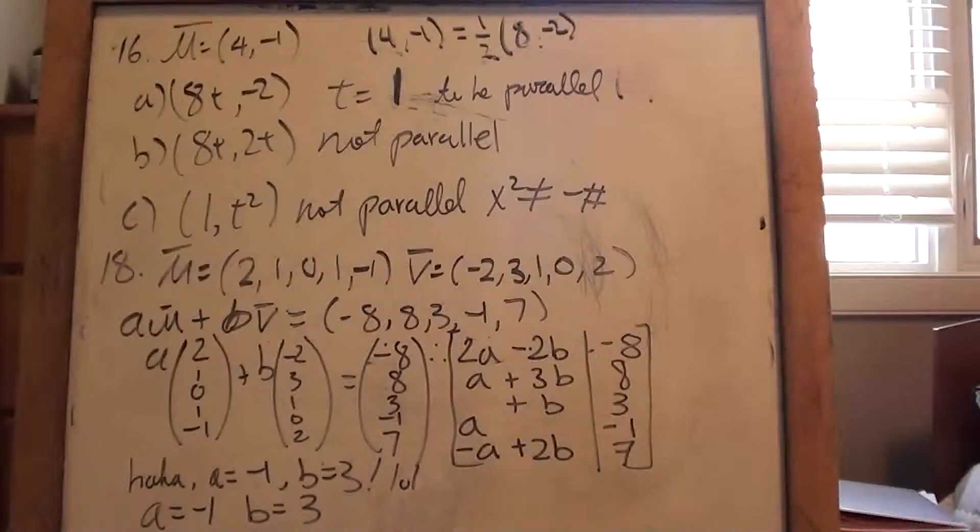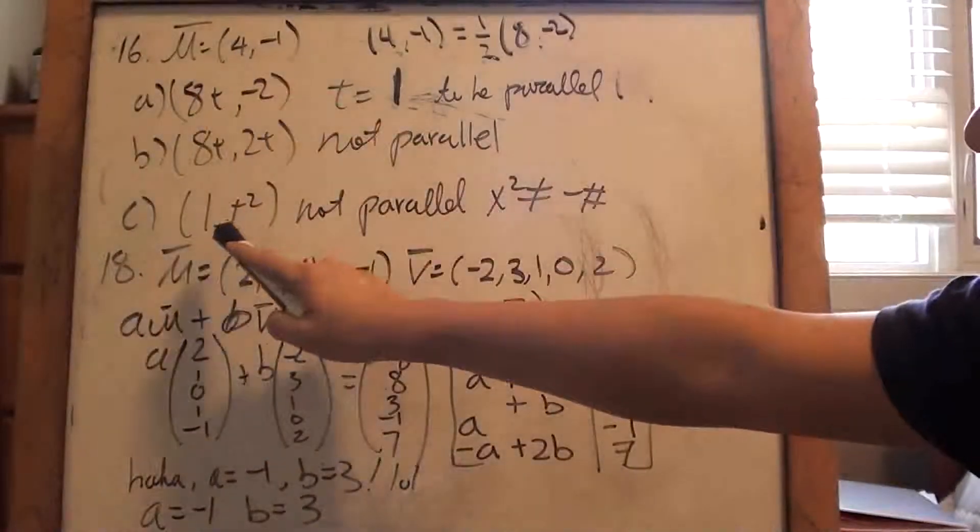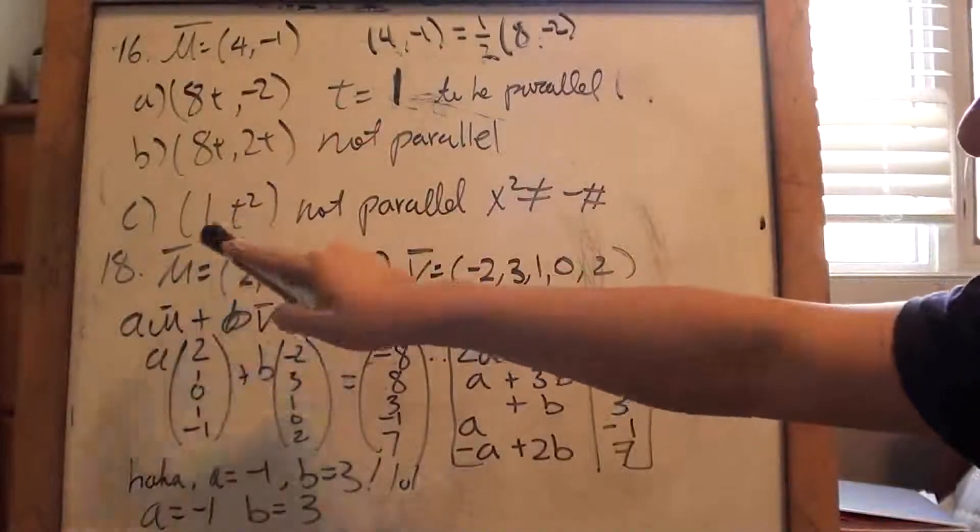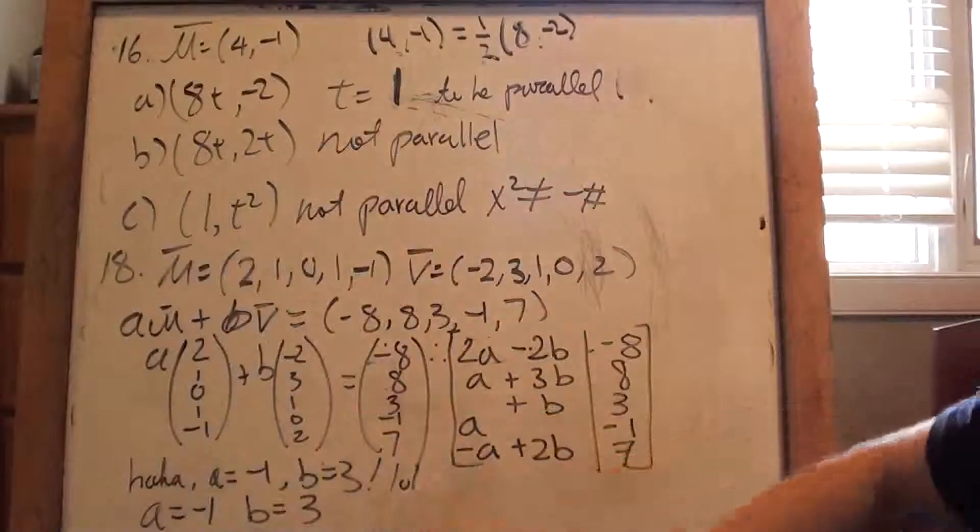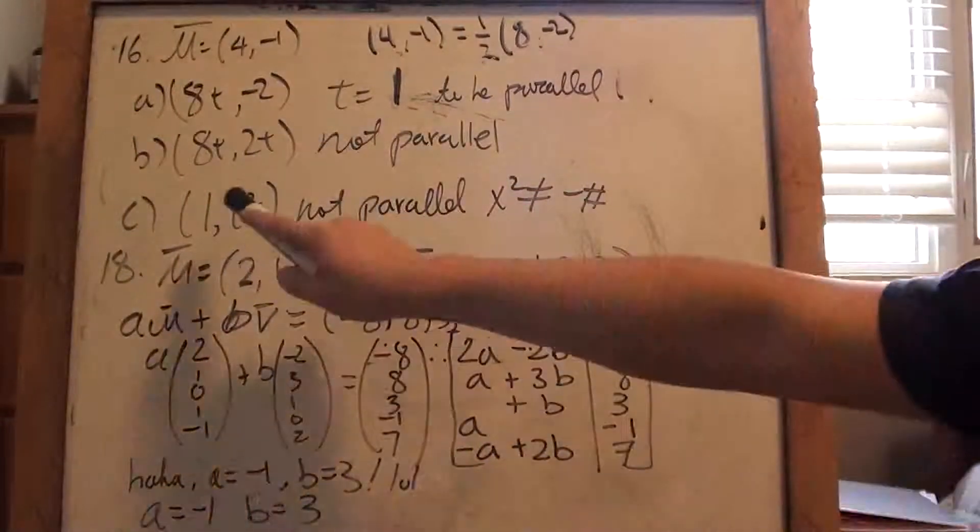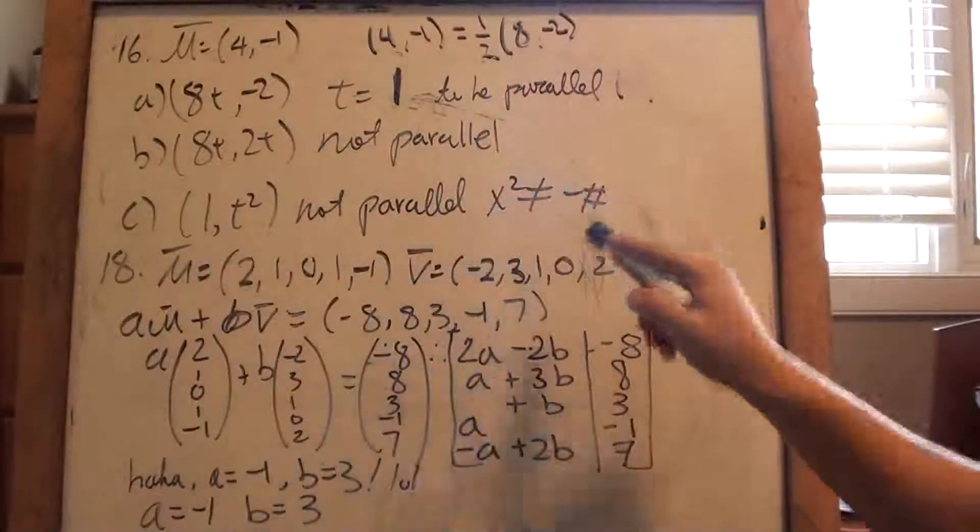C, also not parallel for a different reason. So it's 1, fine. Maybe I could make this 4 and this will be negative 1 over 4, right? That way it would be, you can just times it by 4 to get there. But not possible though, because it's t squared and that's negative, right?